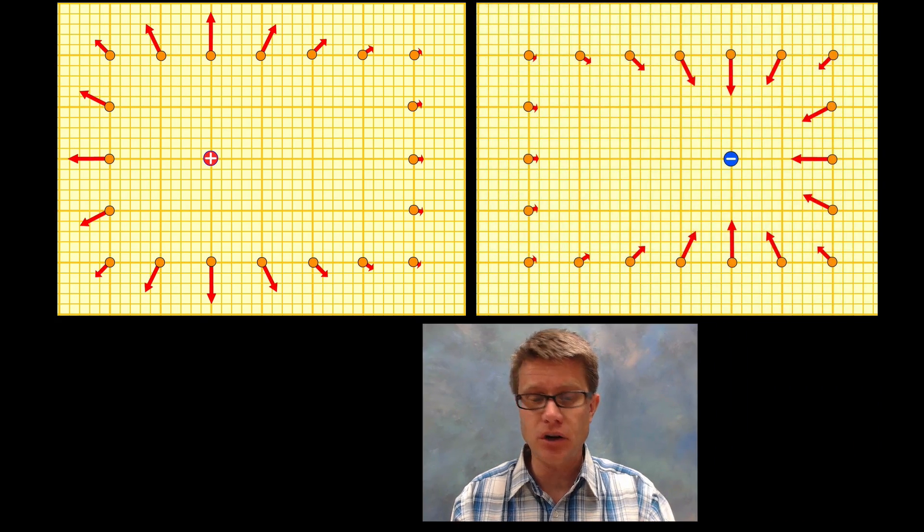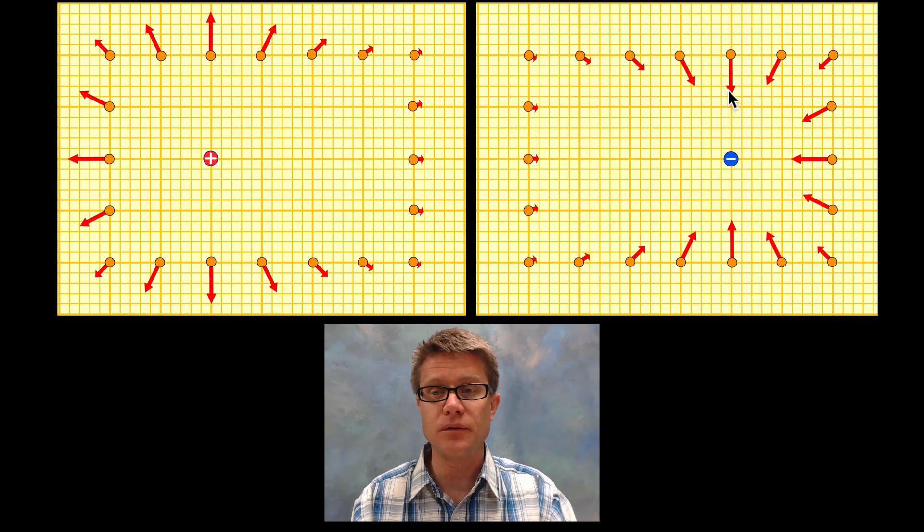Now if we take a negative charge, if we put a negative charge right here you can see the field lines are pointed towards the charge. But it's the same kind of relationship. This is going to be that inverse square of the radius.